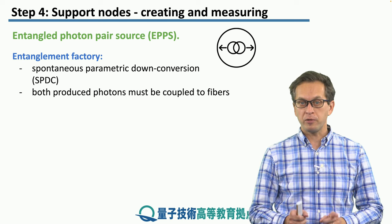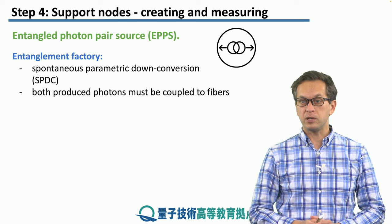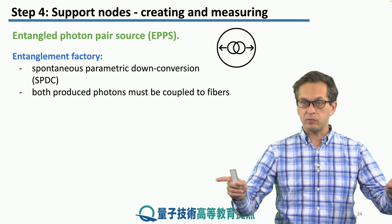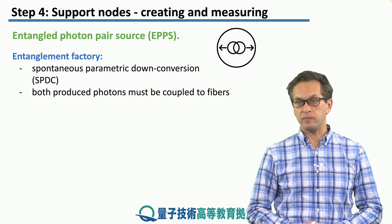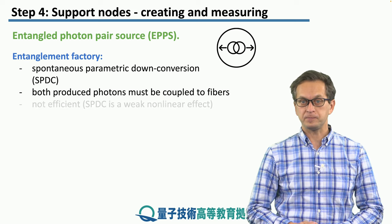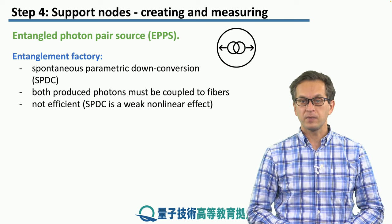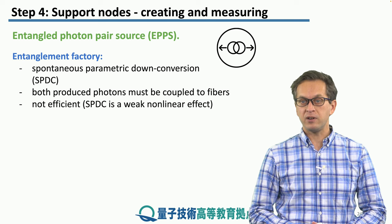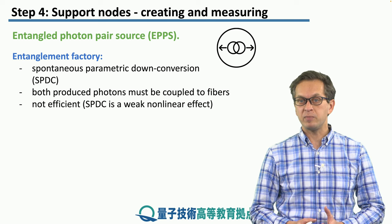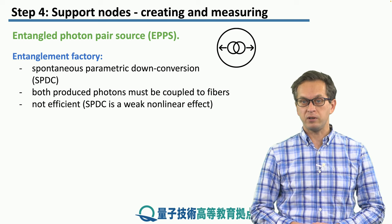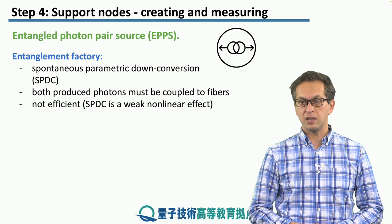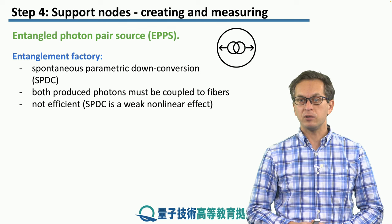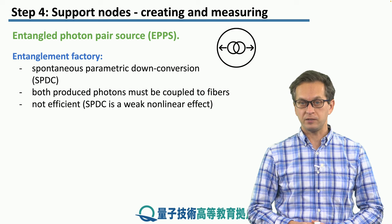Both of these produced photons must be coupled into fibers, which direct them towards nodes of the network. The process of SPDC is very inefficient, and therefore EPPS is also very inefficient. This is because SPDC is a very weak nonlinear effect.